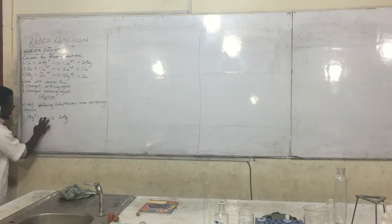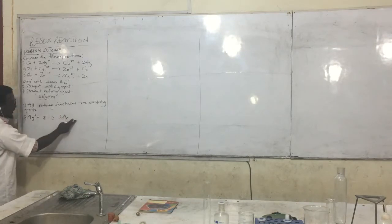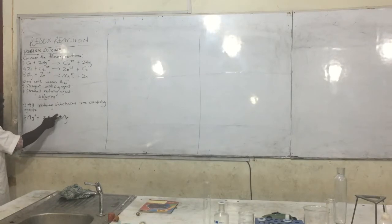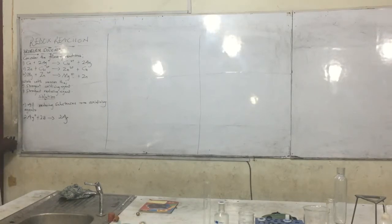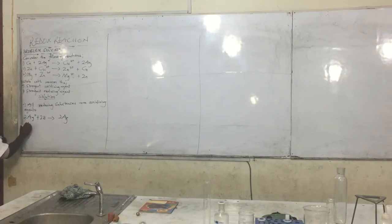We have two Ag, so we write 2Ag+ plus 2e⁻ produces 2Ag. We add the electrons and multiply by two in order to balance the charges. We can confirm that Ag+ undergoes reduction.